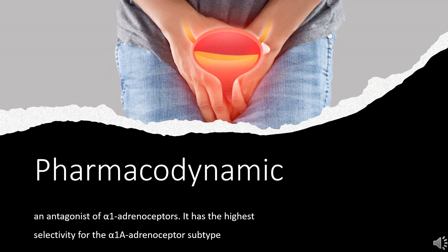Pharmacodynamics: Silodosin is an antagonist of alpha-1 adrenoceptors. It has the highest selectivity for the alpha-1A adrenoceptor subtype, with a 162-fold greater affinity than the alpha-1B adrenoceptor and about a 50-fold greater affinity than for the alpha-1D adrenoceptor. In clinical trials, silodosin improved maximum urinary flow rate, voiding symptoms, and storage symptoms of benign prostatic hyperplasia.